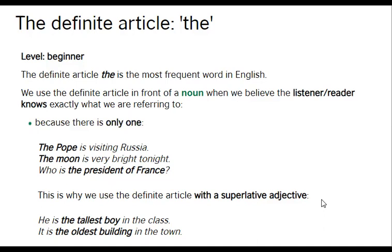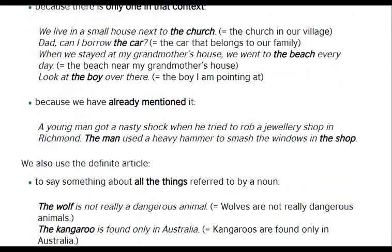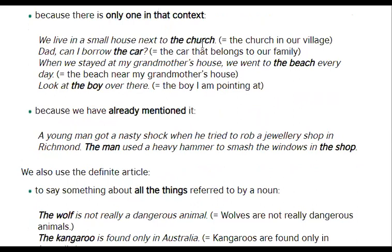Remember, an adjective defines the quality of a noun, and an adjective has three degrees of comparison. You have the simple adjective, then you compare two things — called comparative — and when there are more than two things to be compared, we call it superlative. For example, 'He is the tallest boy in the class' — there are more than two boys in the class and the one we are talking about is the tallest. 'It is the oldest building in the town' — there are many old buildings, but the one specifically referred to is the oldest. Because there is only one in that context.